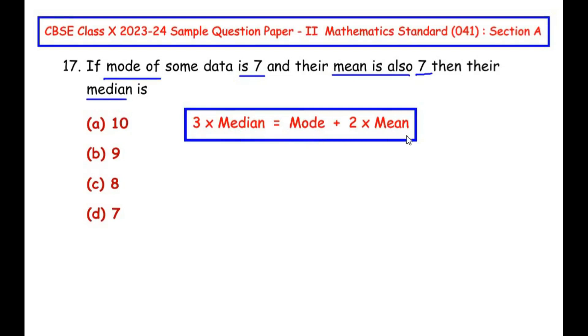Now here you have to simply plug in the values of mode and mean to find out the median. So let me show here. I'm going to write 3 times median, so median I'm going to write it as M. This is what we need to find. Mode is given as 7 so I'll write 7 here.